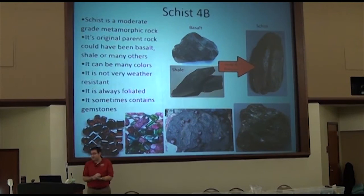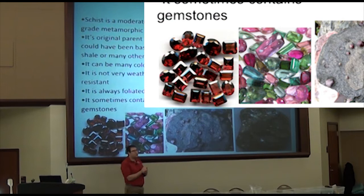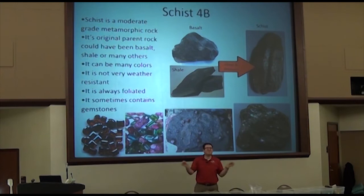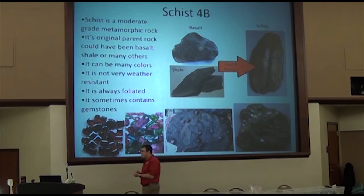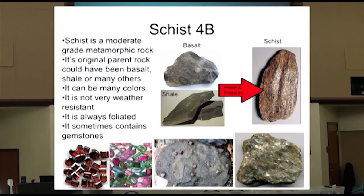There are lots of types of schist. Sometimes you find tourmaline, staurolite, or a number of other minerals in schist. Most often it's just mica or other minerals. Schist usually comes from basalt or shale — something dark, quite often. It's always foliated though — you'll always see those lines or planes somewhere in it, whether really squiggly or pretty flat.